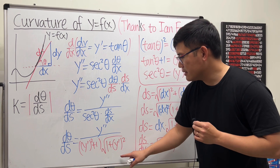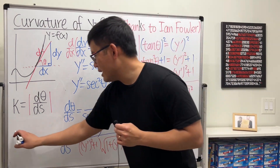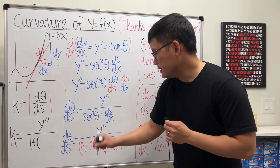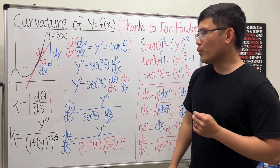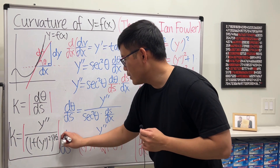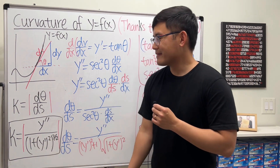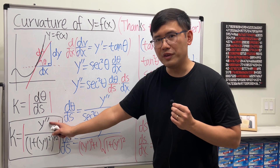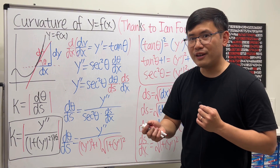Notice that the denominator now has (one plus y prime squared) to the first power from the secant squared term, and (one plus y prime squared) to the one-half power from ds/dx. Adding the exponents: one plus one-half equals three-halves. So ladies and gentlemen, our curvature kappa equals the second derivative over (one plus the first derivative squared) raised to the three-halves power. Apply the absolute value if you want only positive curvature. Note the sign of kappa depends on the sign of y double prime — a negative second derivative means the curve is concave downward, giving negative curvature.